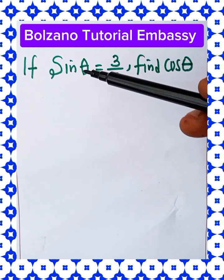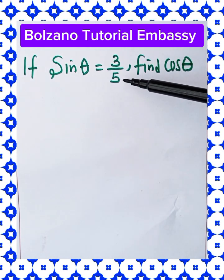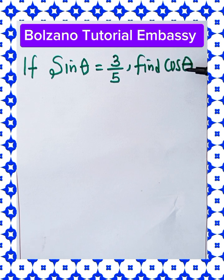If sine theta is equal to 3 over 5, find the value of cos theta. Now to solve the value of cos theta, let's first recall our three basic trigonometrical identities.